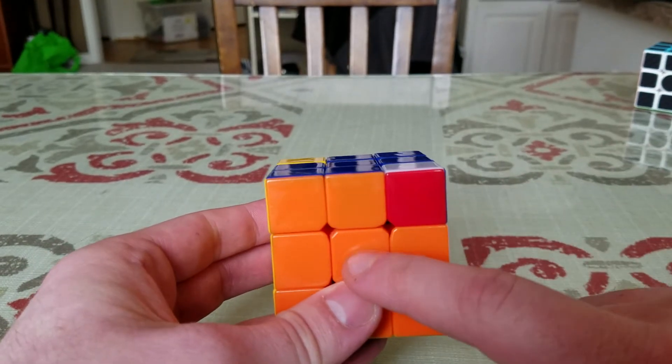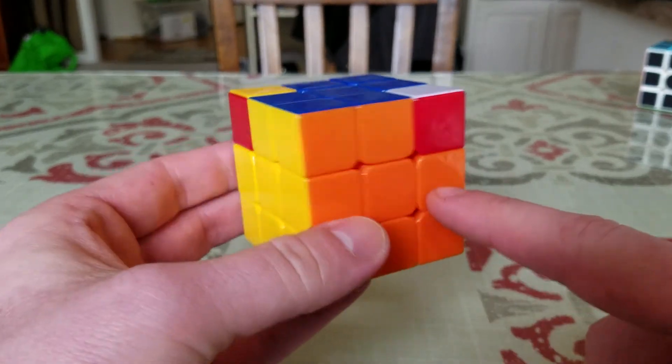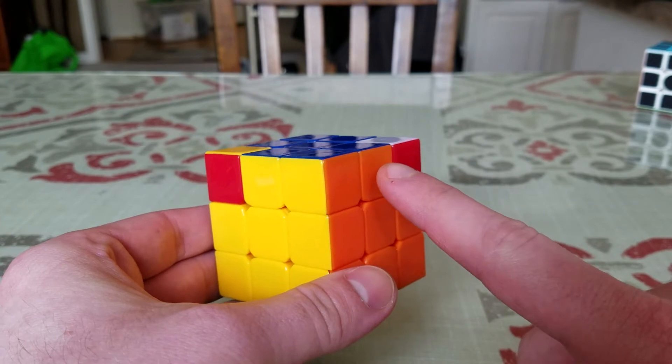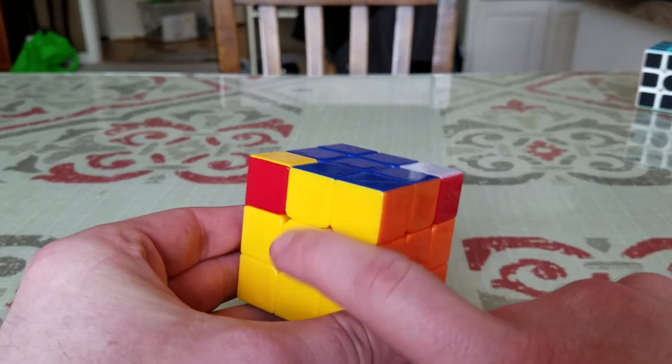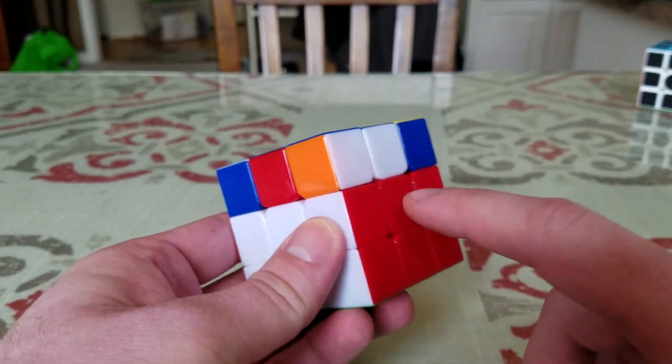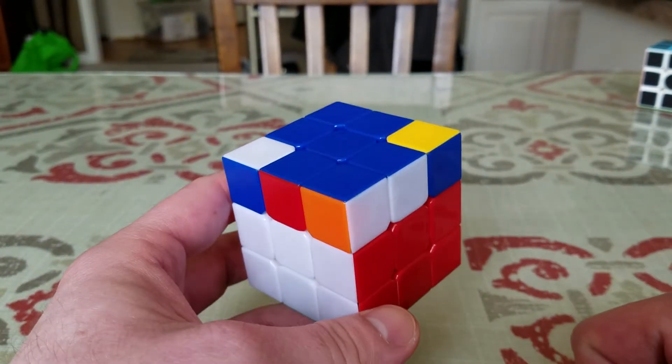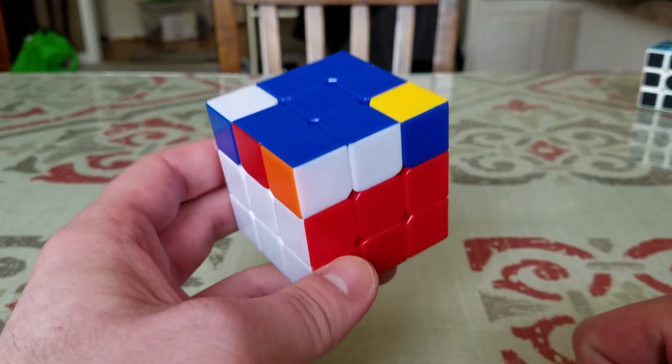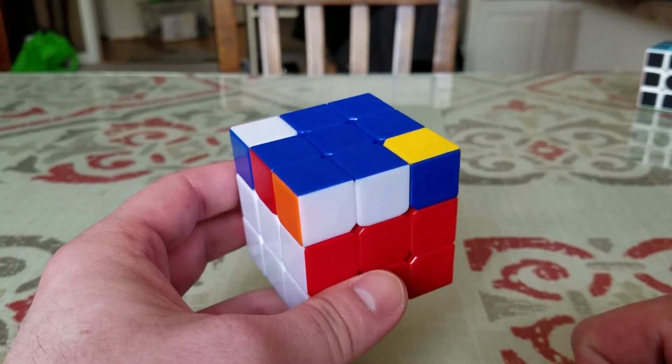Now that I have the orange oriented correctly, look at this. I have the orange and yellow sides. Two adjacent sides are oriented correctly, and the red and white sides are oriented incorrectly. This is a solvable position.